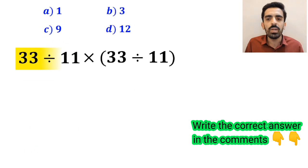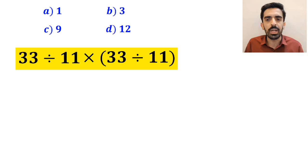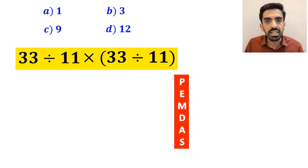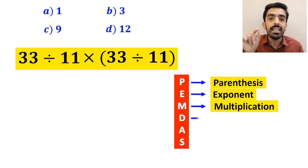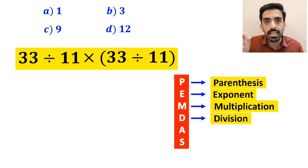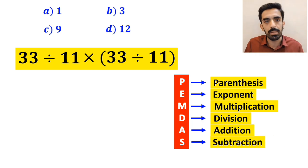Now let's go through this question step by step and solve it together. To solve this expression, we need to follow the PEMDAS rule. According to this rule, P stands for parenthesis, E stands for exponent, M stands for multiplication, D stands for division, A stands for addition, and S stands for subtraction.